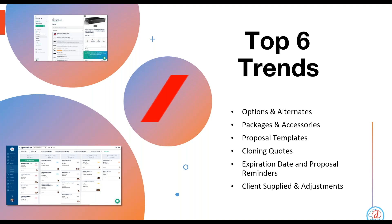We're going to focus on options and alternates, which is a feature available in our software that will allow you to set pricing and give clients options to choose within the quote so that they can accept and sign right then and there. Second will be packages and accessories, where within D-Tools Cloud you can create groupings of items together, or even a pre-built system for the client to select from. You can also add accessories to particular items so that you can move faster when quoting.